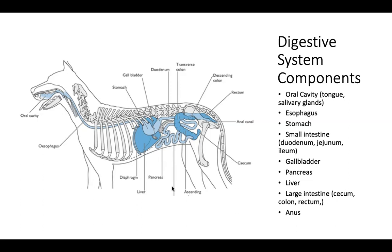Looking at the digestive system components, we have the oral cavity including the tongue and salivary glands, the esophagus, the stomach, the small intestine with three parts, the gallbladder, pancreas, liver, large intestine with three parts, and the anus. You can look at the picture to see roughly where they're located within the body.